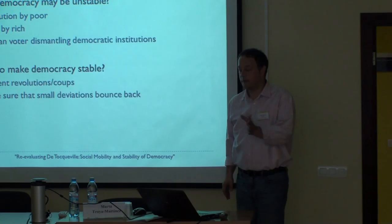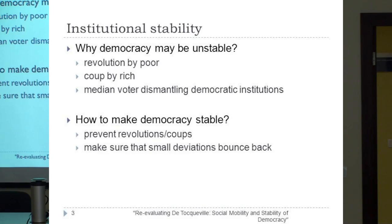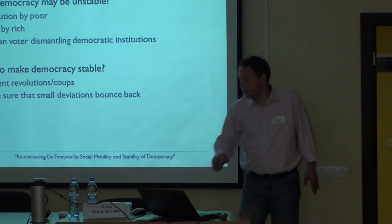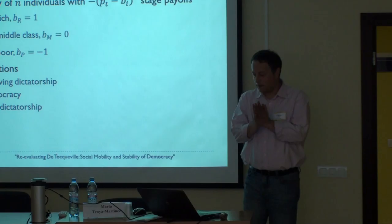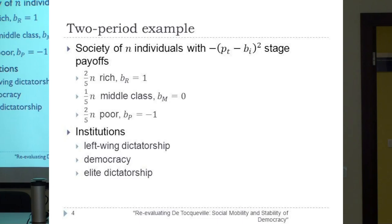This relates to a major topic of our recent work — institutional stability. Democracy might be unstable for several reasons: there might be a revolution by the poor, a coup by the rich, but in this paper we focus on the situation where the current decision maker, the median voter under democracy, dismantles democratic institutions. I will show you a simple two-period example which carries most of the insights from our general model. The whole paper is basically an extension of this example to the general case.